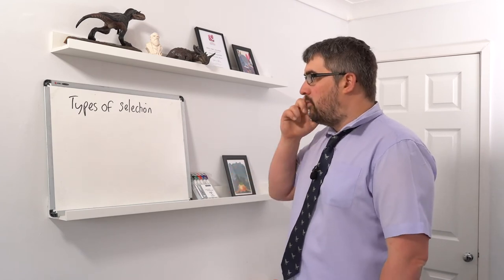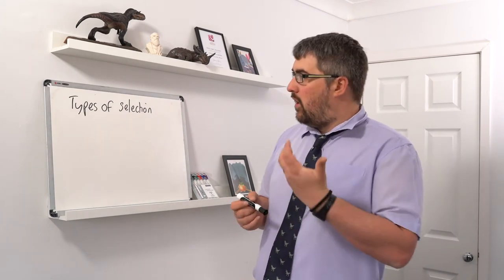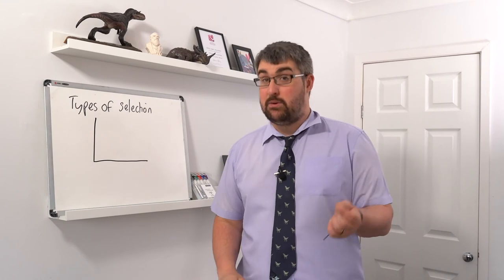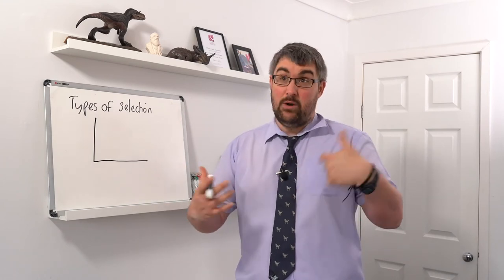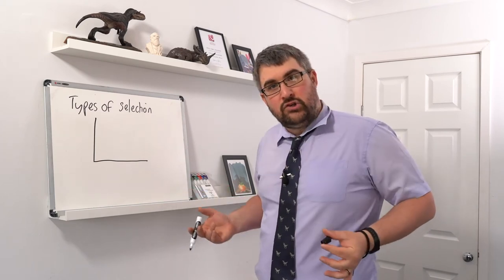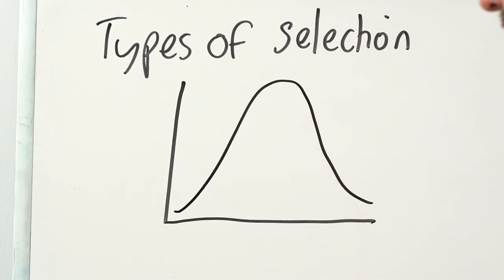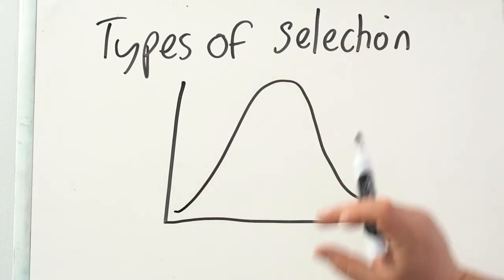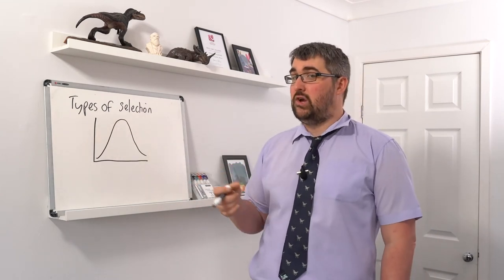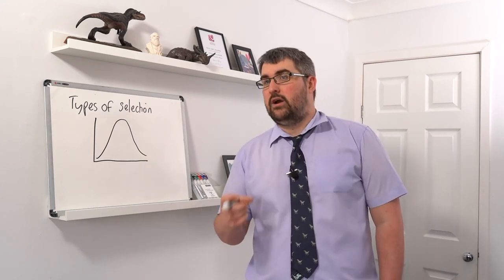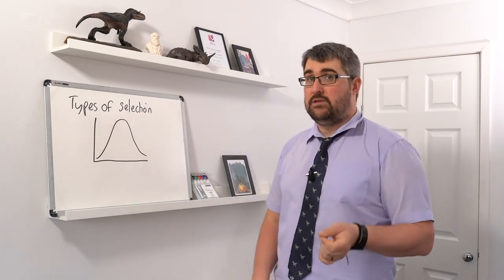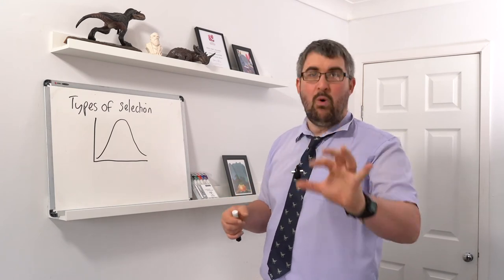Now let's look at types of selection. First we need to understand normal distribution. If you have a particular character trait that is a continuous variable — like height or body mass with a wide range of intermediate values — you'll generally see a bell curve where the majority of individuals are near the mean and fewer individuals are at the extremes. These continuous traits are usually associated with polygenic characteristics — characteristics controlled by multiple genes. With a single gene controlling a trait, we tend to see discontinuous, categorical variation instead.